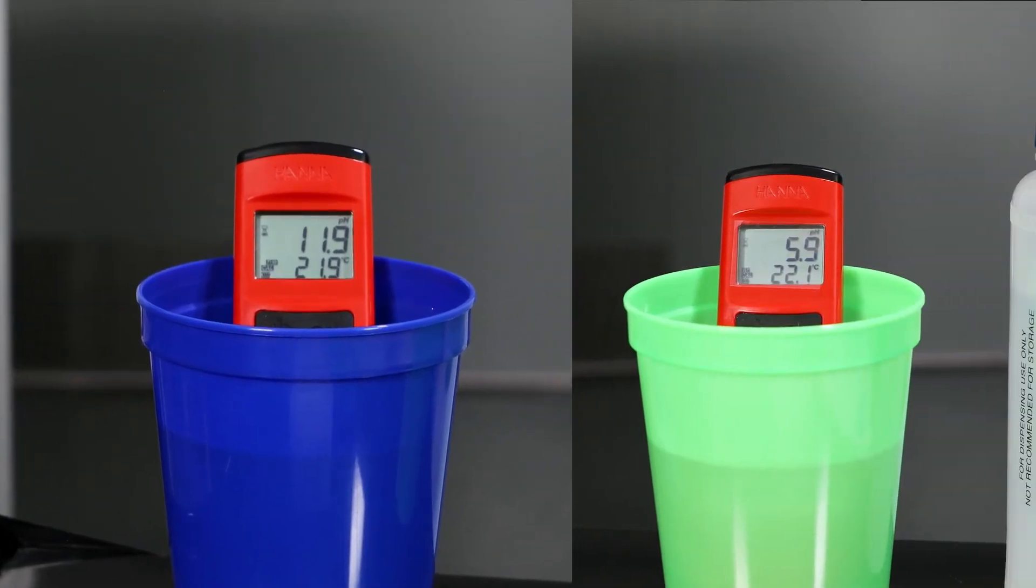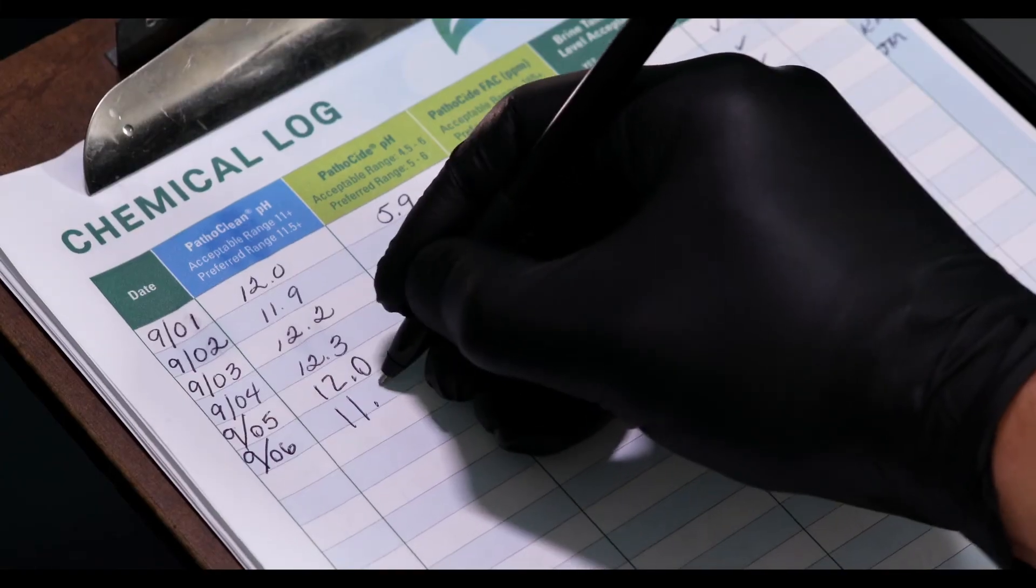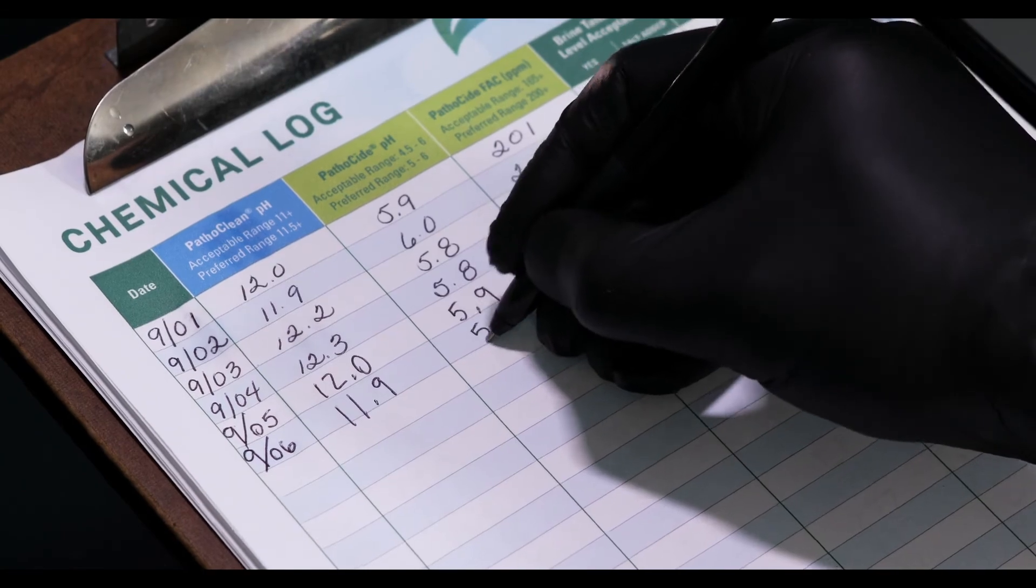The Pathoclean should ideally be 11.5 pH or higher. The Pathoside should be 4.5 to 6.0 pH. Record these numbers on the daily log sheet along with the date.